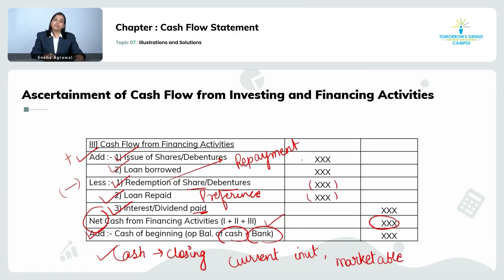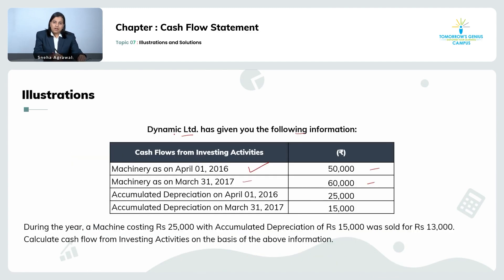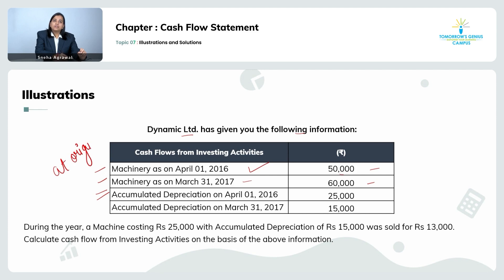Let's see an example for understanding in a much better way. Dynamic Limited has given the following information: machinery as on 1st April 2016 is 50,000; machinery as on 31st March 2017 is 60,000. Whenever accumulated depreciation data is given in the question, you need to understand that the values of machinery given are at original cost and not net of depreciation.